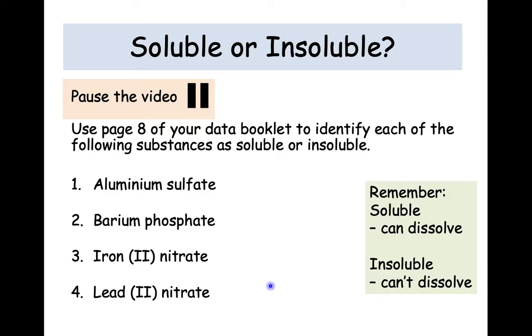Okay, so if you've had a chance to decide your answer for that then we'll go over it just now. So aluminum sulfate is VS in the data book so that means it is soluble. Barium phosphate is I so that means it is insoluble. Iron (II) nitrate is VS so very soluble. And lead (II) nitrate is also very soluble. It doesn't matter if it says S or VS at this point, just soluble is enough. Another reminder over here is soluble means it can dissolve in water and insoluble means it cannot dissolve in water.